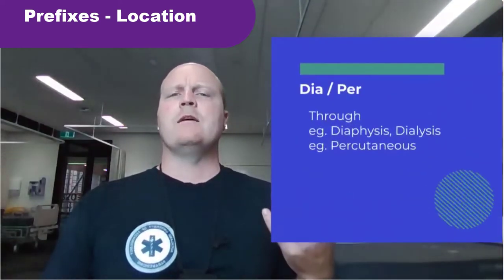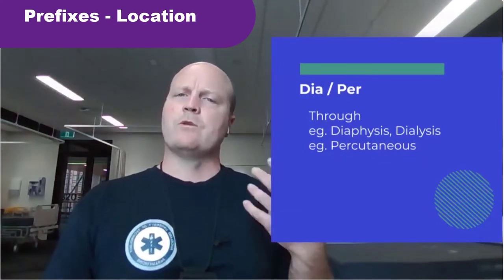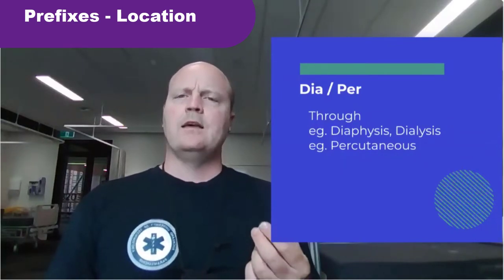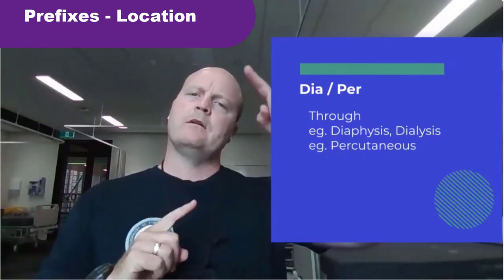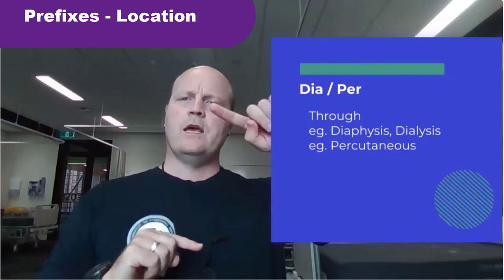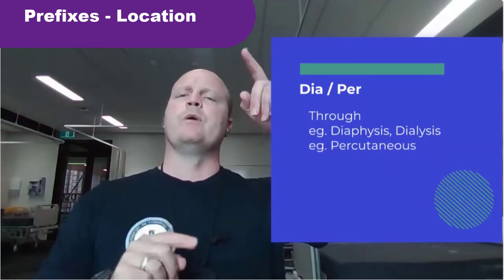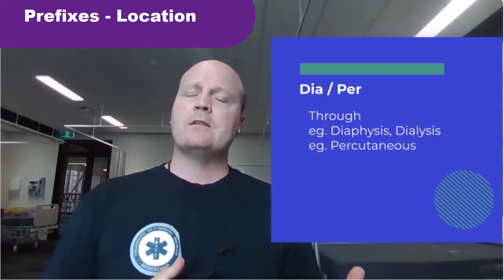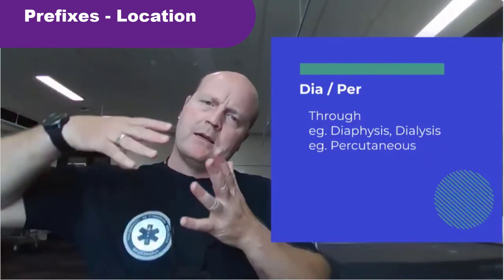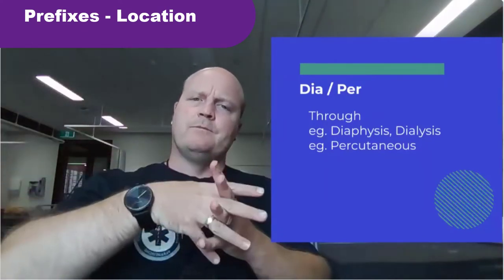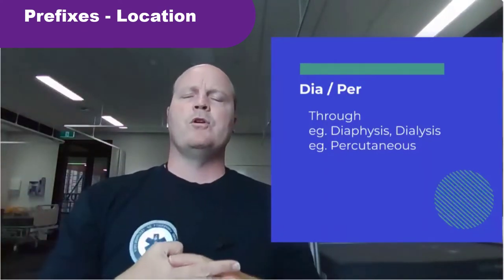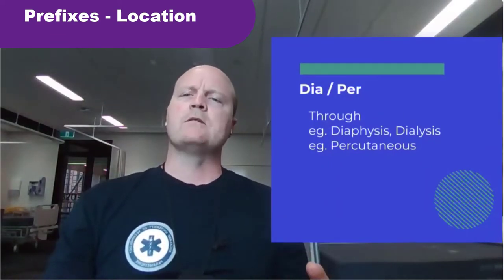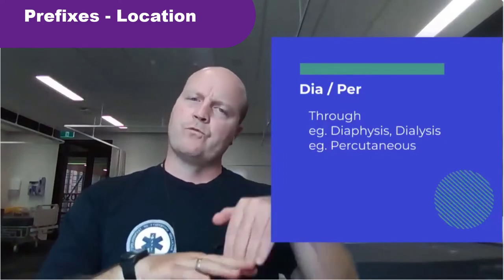Then we have dia and per. Dia means through or in between. So the diaphysis is in the middle of a long bone — it's the shaft of a long bone and it's in between the two bone ends, which are the epiphysis. Dialysis is when we pass blood through a membrane to clean it. And percutaneous — cutaneous is to do with the skin — so percutaneous will be something that goes through the skin.